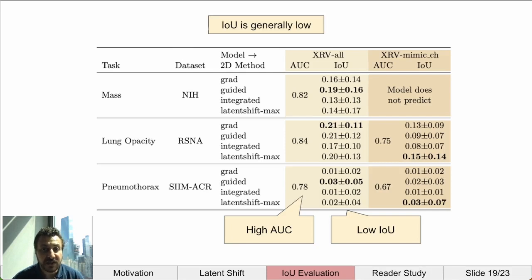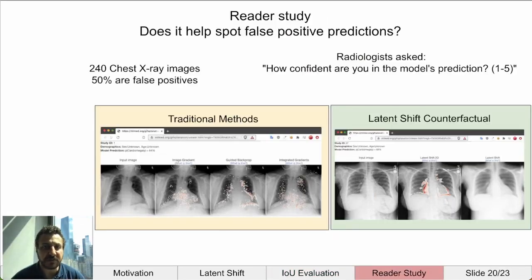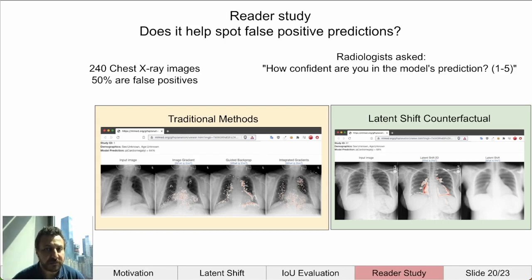This is worrying given that the model achieved an AUC of almost 80%. In order to validate if this approach can help spot false positive predictions, we asked two radiologists to evaluate how confident they were in a model's prediction. 240 chest x-rays were selected from the NIH dataset where models predicted positive for a pathology, with 50% selected as false positive predictions. For each image, they viewed the prediction in two ways — traditional methods including image gradient, guided backprop, and integrated gradients; and the latent shift counterfactual including an animation and a 2D version. The order was randomized, and a cooling-off period of one week was used so they could not remember the images they had seen before.